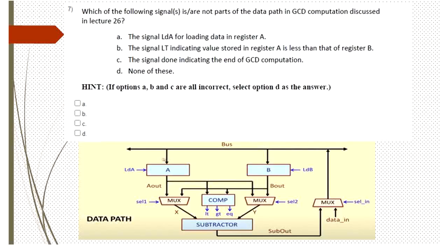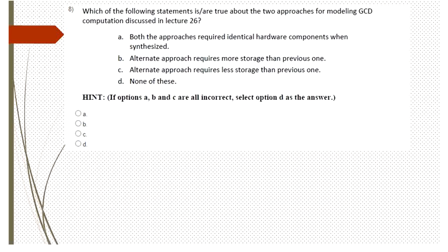The next question is related to the GCD computation example from Lecture 26. We need to find which signals are not part of the data path. Signal load_a is a control path signal coming from the control path to the data path, so it is not part of the data path. Signal lt, indicating the value stored in register A, is the output of the comparator and is part of the data path. Signal done is part of the control path. That's why the answer is A and C.